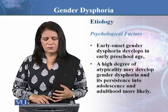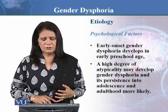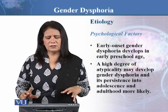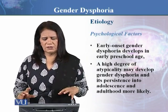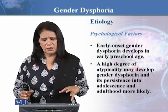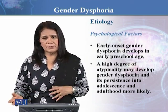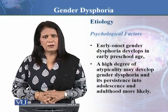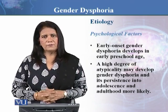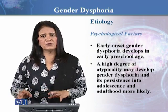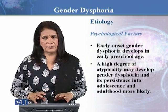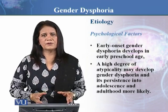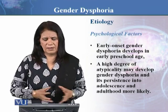Early onset gender dysphoria develops early. It has been seen that in school, and even at pre-school age, gender dysphoria starts to appear. The child is very small and whatever we have discussed is actually manifested in play, in preferences of dress, and preferences of playmates.